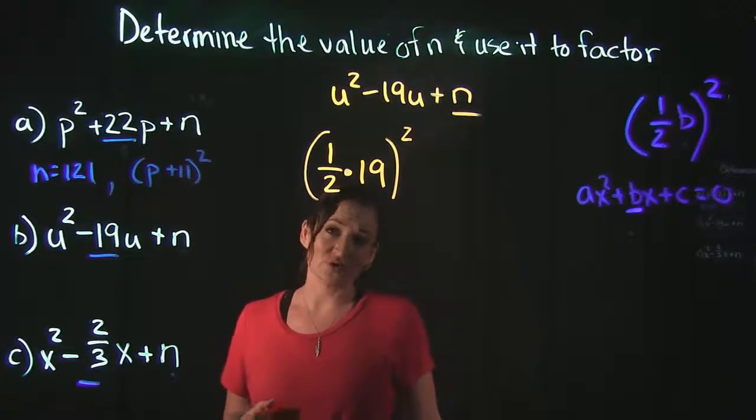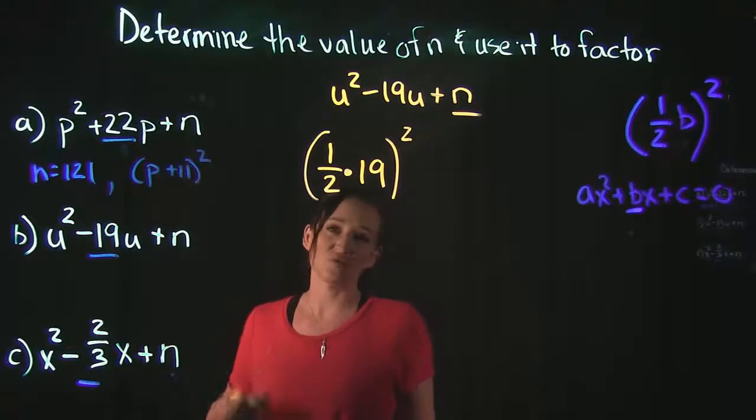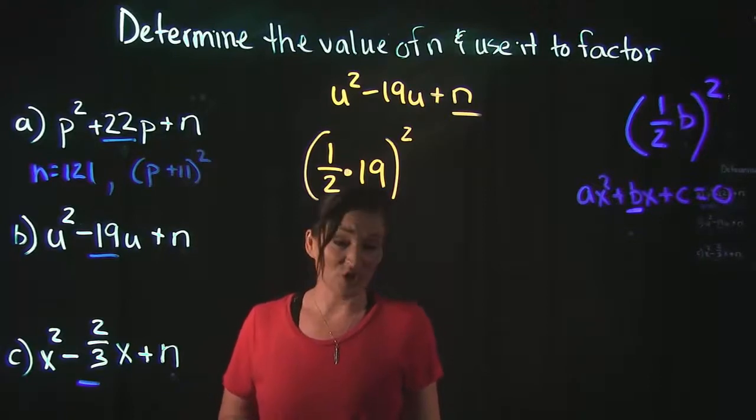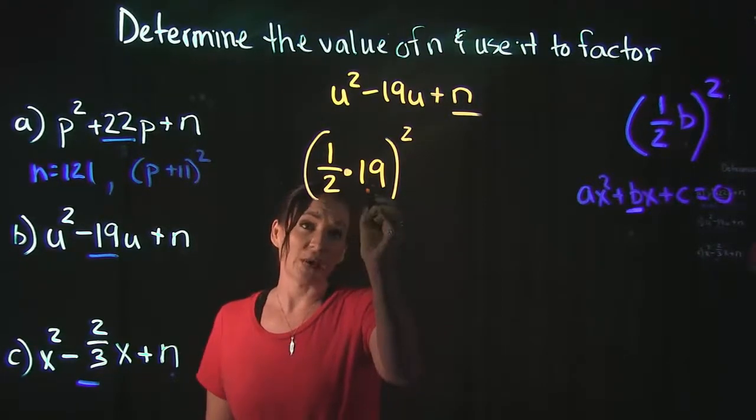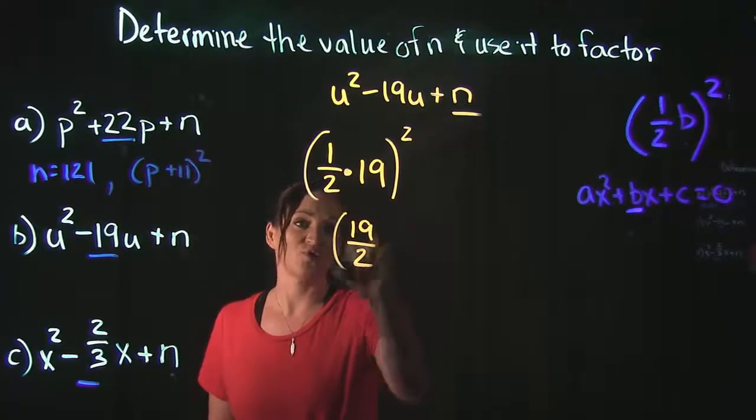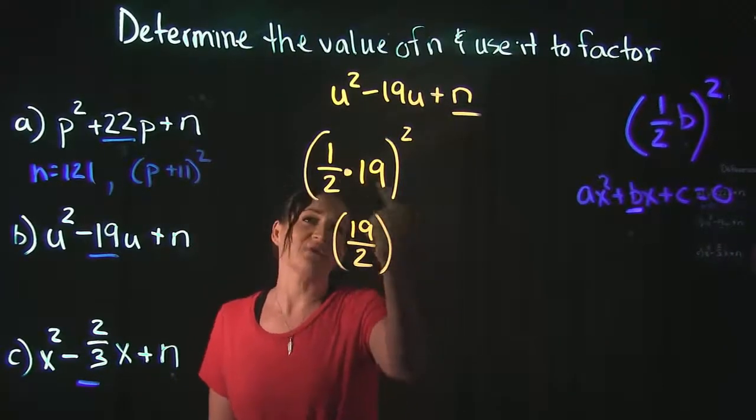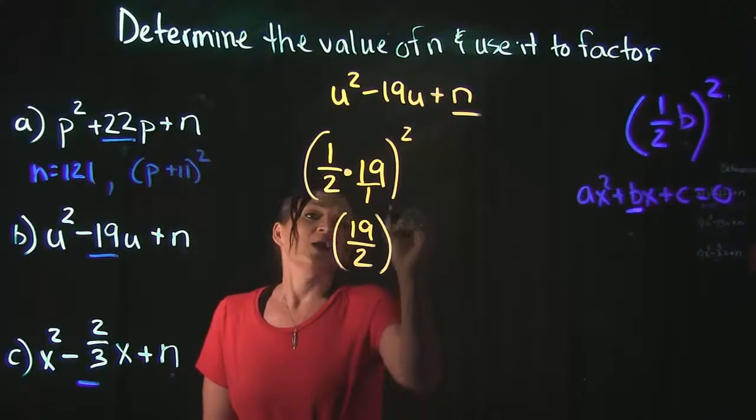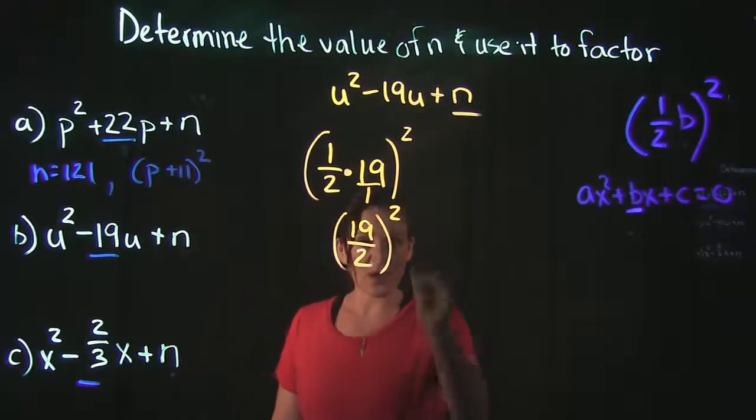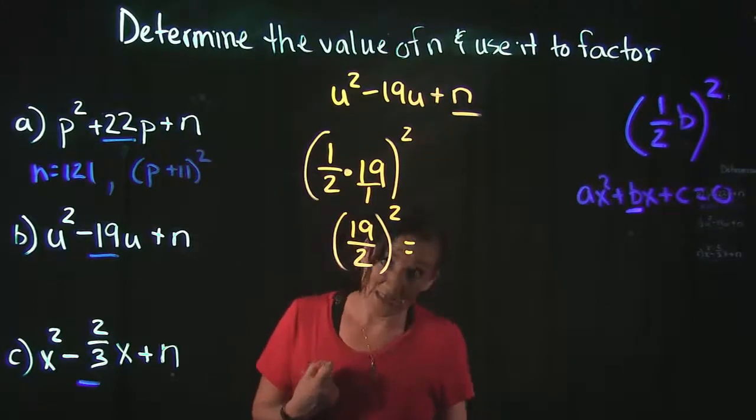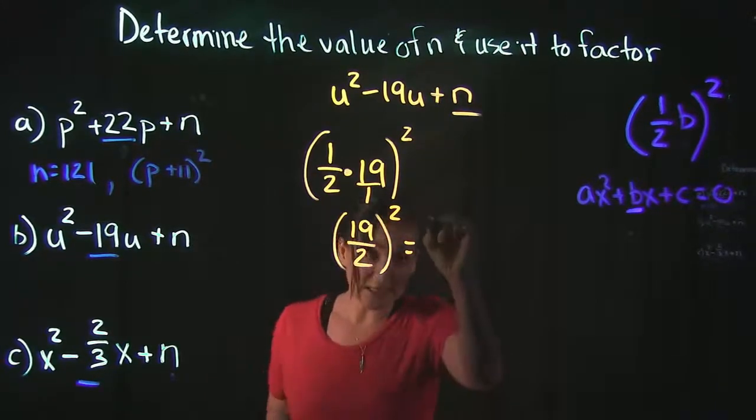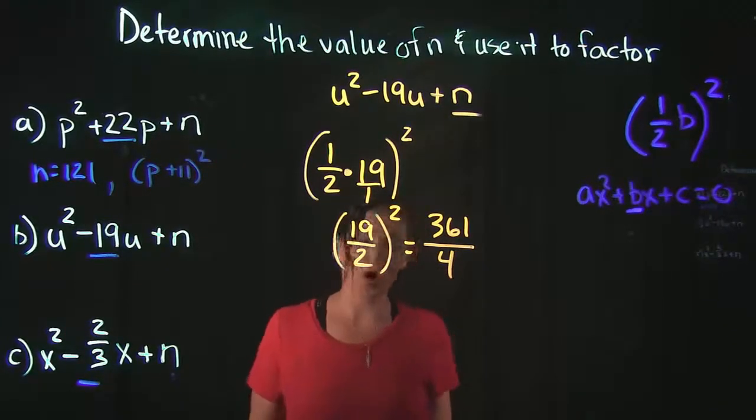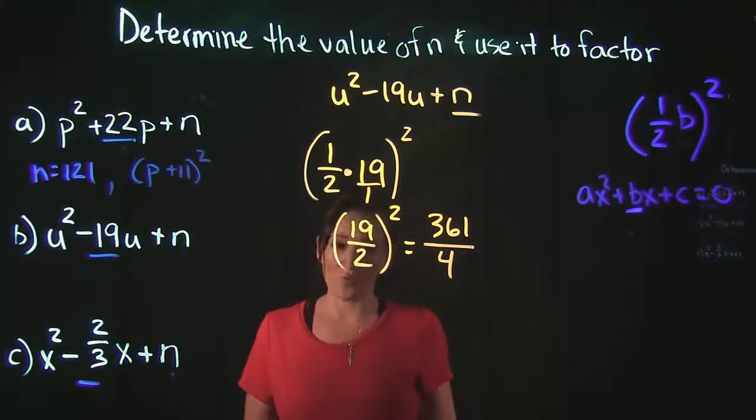Well, 19 is not an even number, so you can't just perfectly take half of that like if it was 20—half of 20 is 10. Half of 19 is actually 9.5, but we don't want to use a decimal, so we're actually going to just put the 19 over 2 and write it like this: one half times 19 is the same thing as taking 19 and dividing it by 2. We still need to square this thing in order to figure out what n is, so if we square 19 over 2, 19 times 19 is 361, and 2 times 2 is 4, so 361 over 4 is what our n is for this problem.